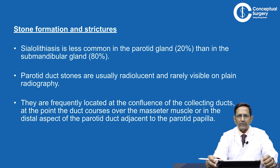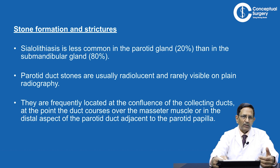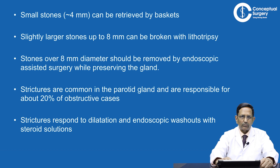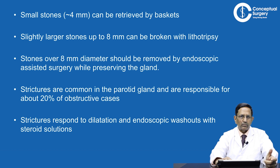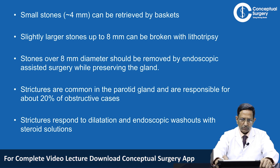Salivary stones are a benign condition. They are more common in the submandibular gland — 80 percent — and only 20 percent occur in the parotid. In the parotid, they are usually radiolucent and not visible on X-ray. However, there are recurrent attacks of swelling during chewing, which suggests salivary calculus. Small stones less than 4 millimeters can be removed by basket. Larger stones can be fragmented by lithotripsy using a pneumatic endoscope and then washed out with a Dormia basket. If there is a stricture of the duct, it responds to endoscopic washout, dilatation, and sometimes steroid solution.